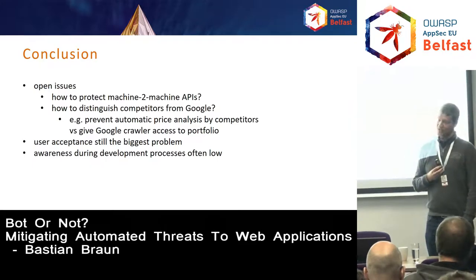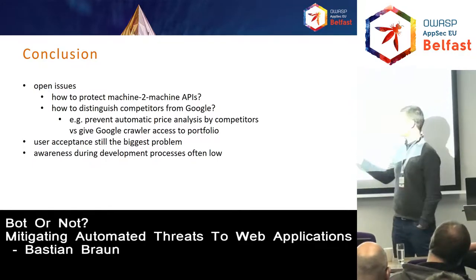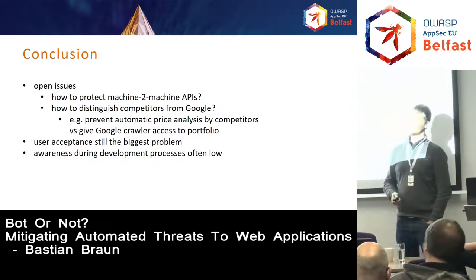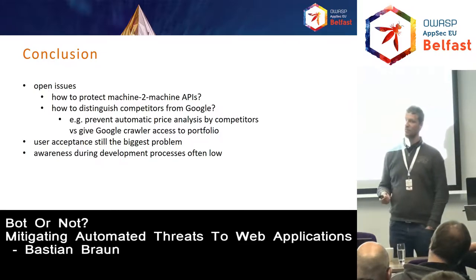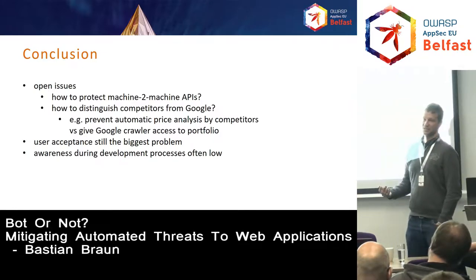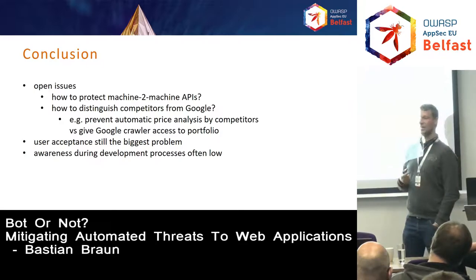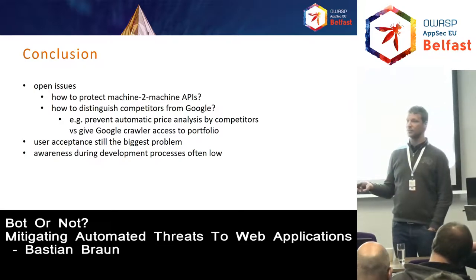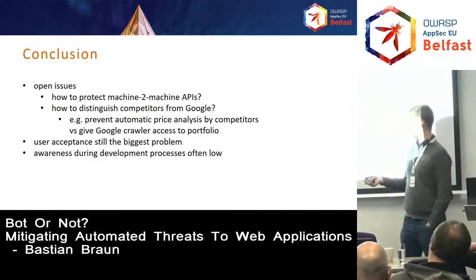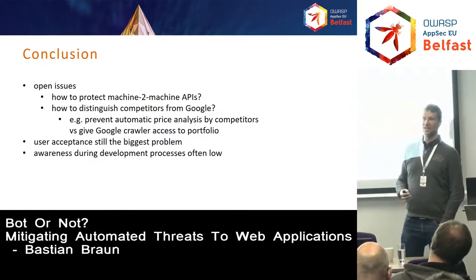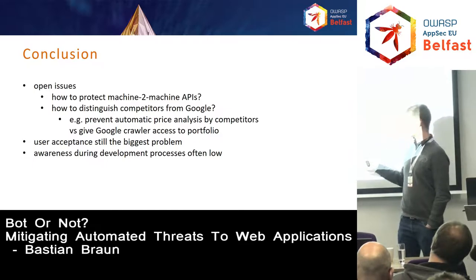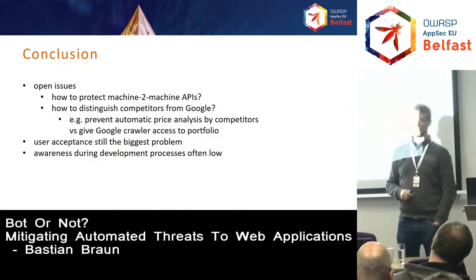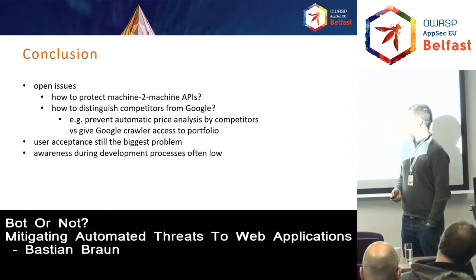User acceptance is still the biggest problem because our customers don't accept any approach that might impact honest users. From a penetration testing point of view, whenever we report missing anti-automation, this is the most expensive and hardest problem to fix afterwards. But when we are involved in the implementation process from the beginning, we can propose appropriate approaches and the costs are negligible compared to leaving out security experience at the start. It costs almost nothing in the beginning, but is very expensive to do in the aftermath.